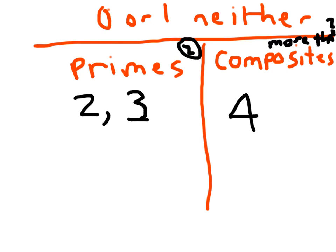Think about 5, 6, and 7 and put them in the appropriate spot — prime or composite. Five is prime, six is composite, and seven is prime. Go ahead and continue all the way up to 30, sorting those out as either prime or composite. Hit pause right here and figure out up to 30.